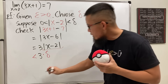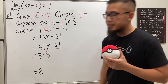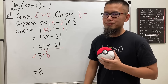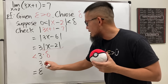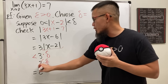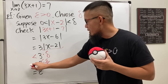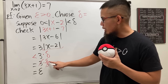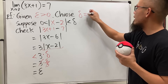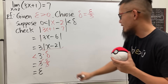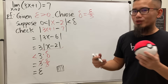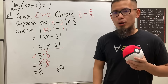In the end we want 3·delta to equal epsilon. So we ask: three times what equals epsilon? Three times epsilon/3 equals epsilon because the threes cancel. So delta should be epsilon/3. Come back and fill in delta = epsilon/3, and we are done. This is how you casually prove a limit with the epsilon-delta definition.